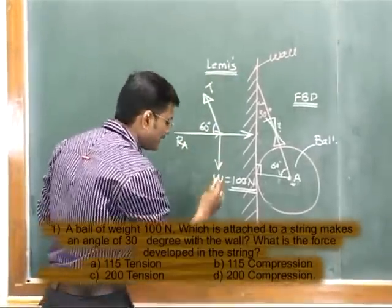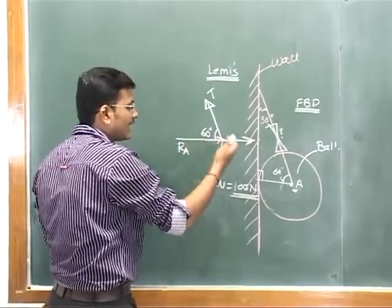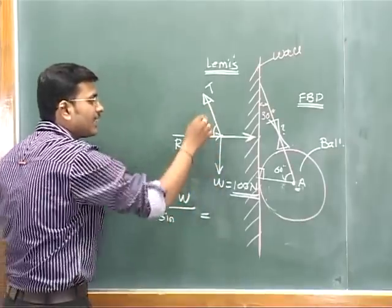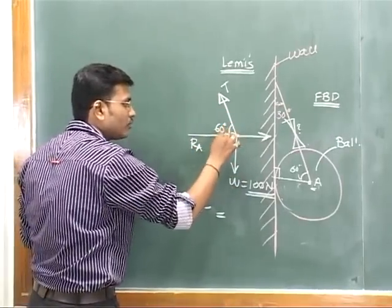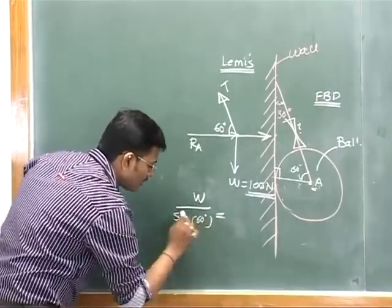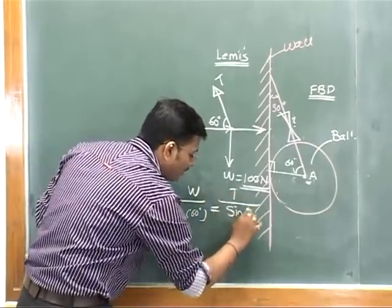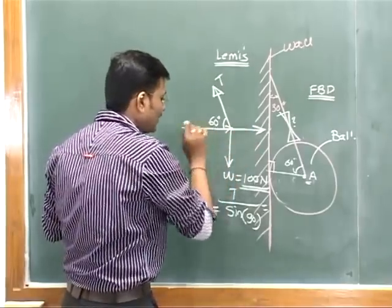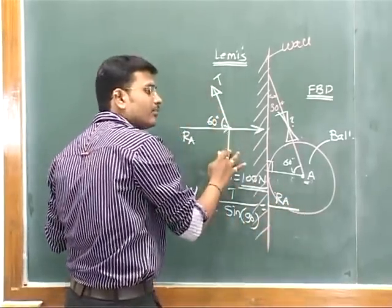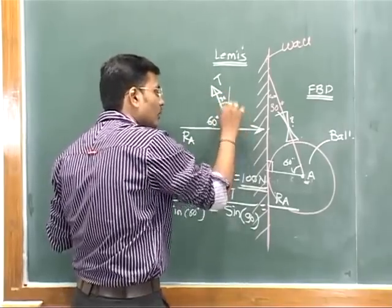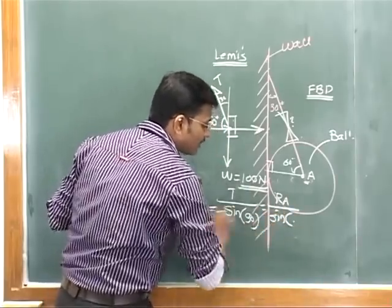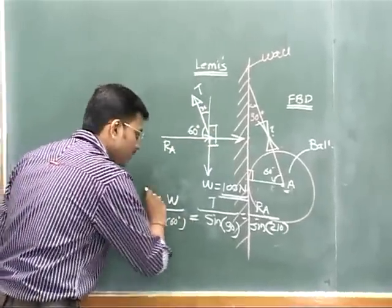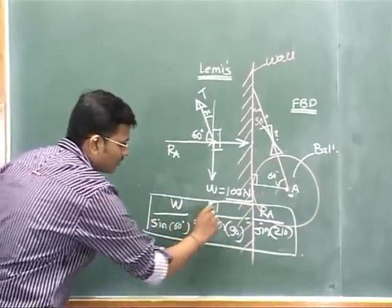Lami's theorem states that each force divided by the sine of the angle between the other two forces remains constant. Since there are only three forces, Lami's theorem is applicable. The angle between the weight W and reaction R is 60 degrees, the angle between W and T is 90 degrees, and the angle between T and R is 120 degrees (since 30 + 90 = 120, and 120 + 90 = 210 degrees total check).